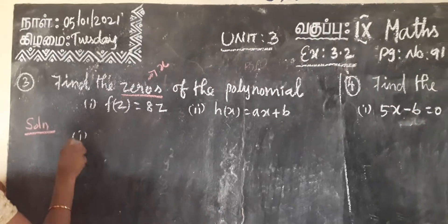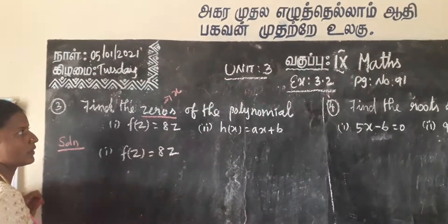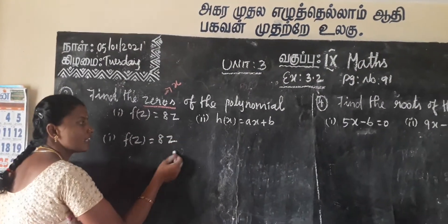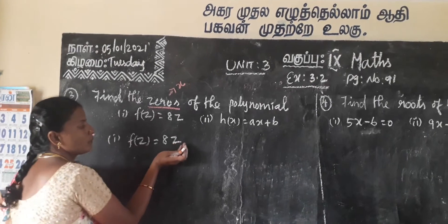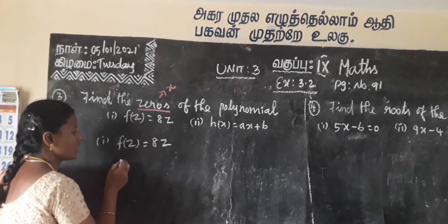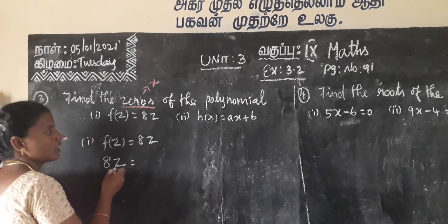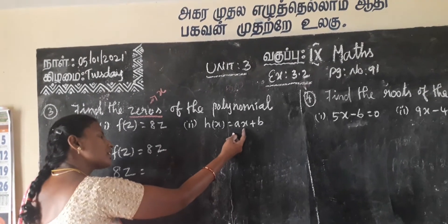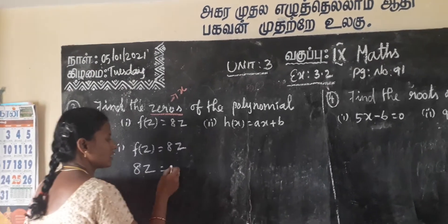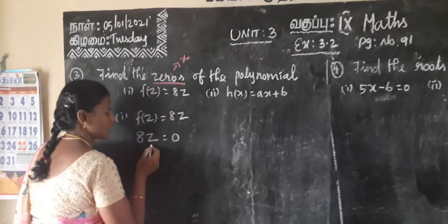See the solution. The first one is f of z is equal to 8z. Zeros of the polynomial means we have to find out the variable values. So we take the right hand side: 8z. The substitution form is ax plus b, and we set the right hand side equal to 0.